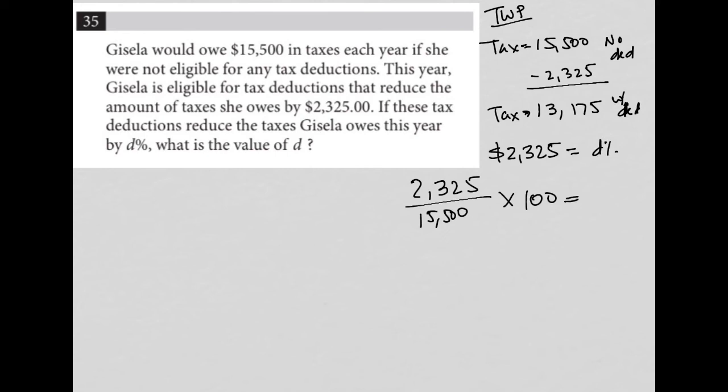So times 100 is 15%. So just keep in mind, when you find a percentage, you're looking for part over whole times 100. So hopefully you remember that. So that's all I did. The part that was reduced is 2325. The whole amount that it's being reduced from is 15,500. And of course, I multiply by 100. So our answer here for D is 15.